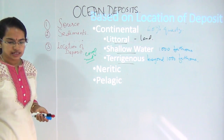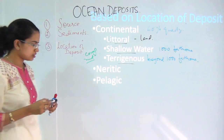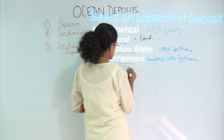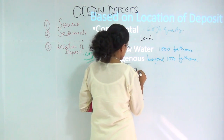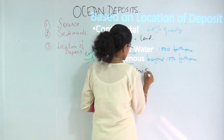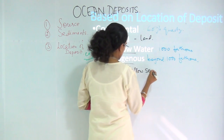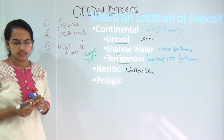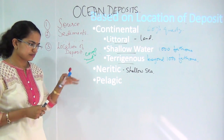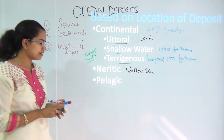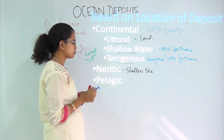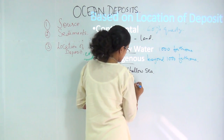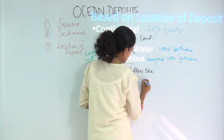The next is the neritic deposits, which are usually found in shallow seas. Finally, you have the pelagic deposits, found at mid-depth, and they are usually rich in silica and calcium.